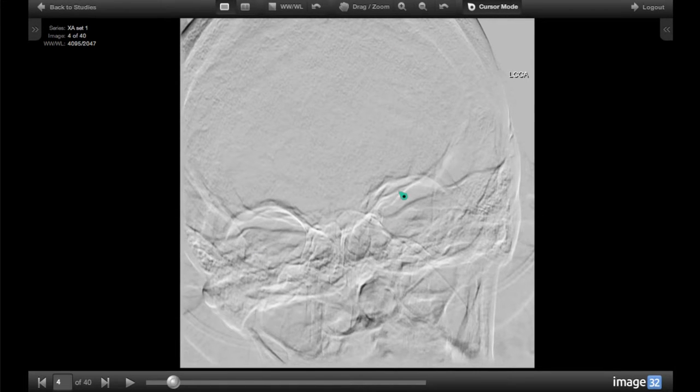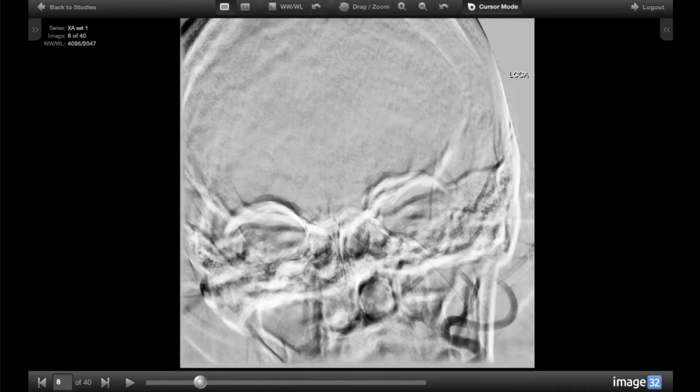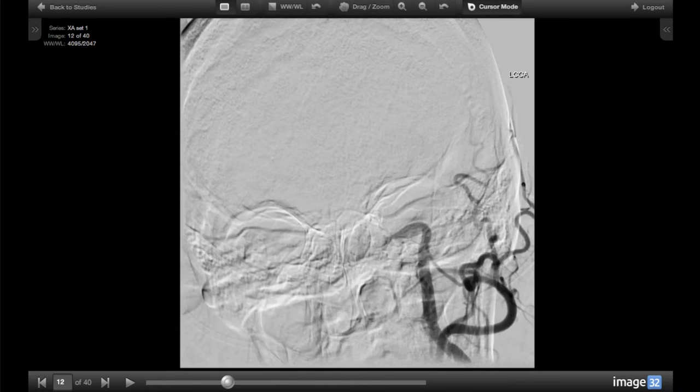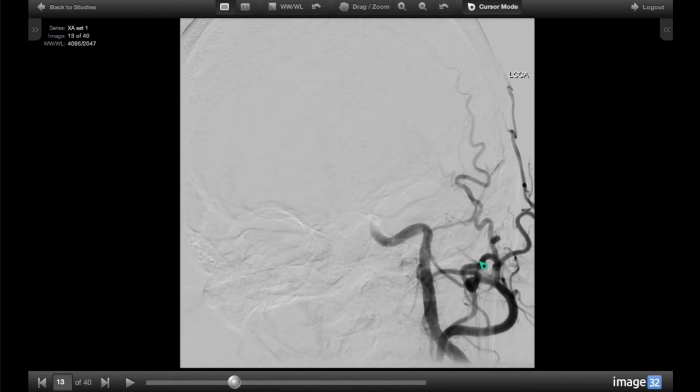So here is her diagnostic angiogram. This is an x-ray movie. You can see the skull, the eyes here. The x-rays are going front to back, and now we're injecting dye, a contrast dye, into the arterial system on the left side, which is shown on the right side of the screen. There's opacification of contrast flowing into the arteries of the brain as well as the arteries of the scalp on the outside.